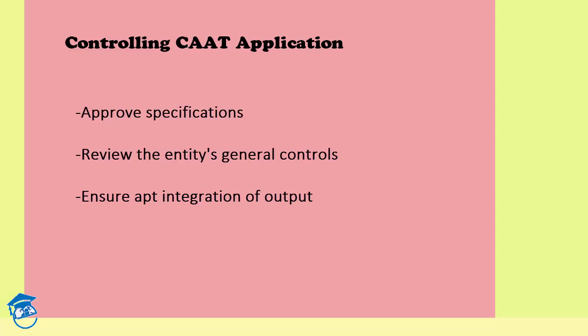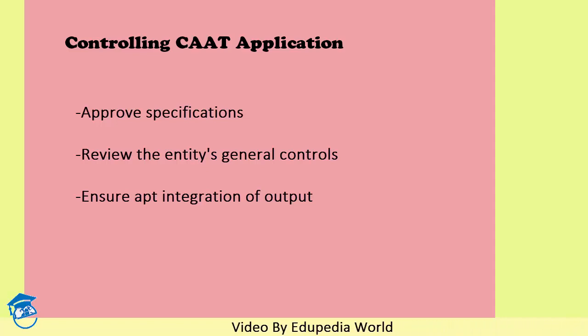The third control consideration is to ensure that appropriate integration of the output is being done by the auditor during the entire audit procedure. This will only be controlled if you give 100 percent attention while the application software is being prepared and implemented. You need to maintain a controlled amount of attention and be part of it at all times — only then will you be able to approve specifications, review general controls, and integrate the output throughout your procedure.